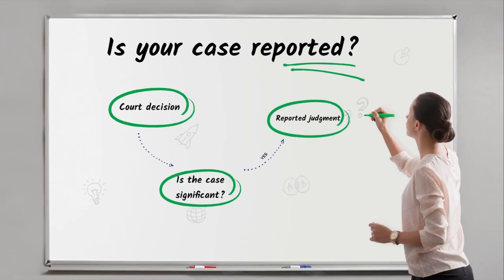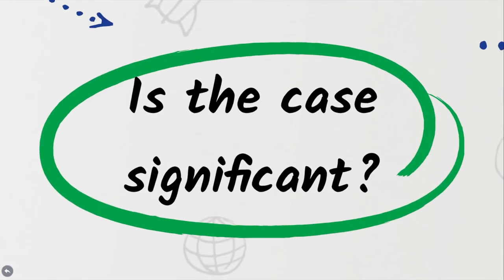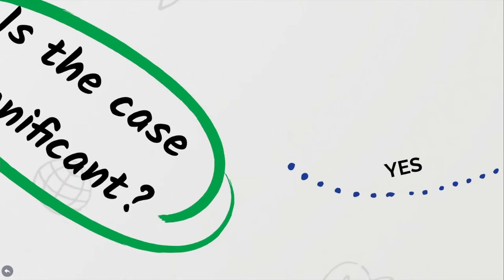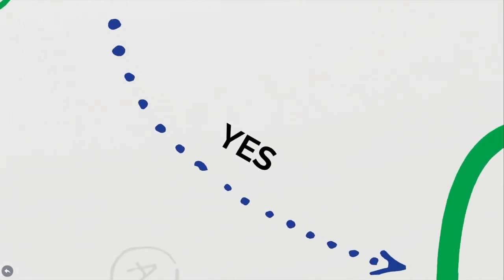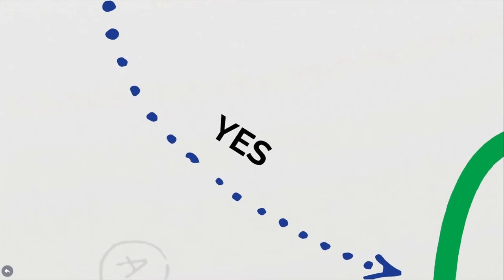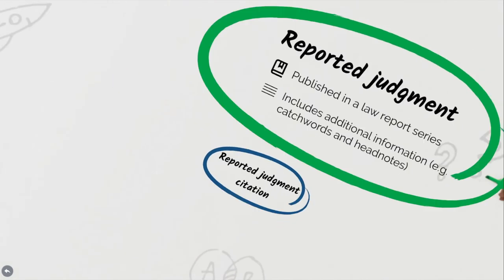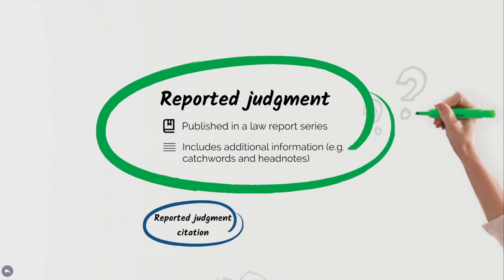Cases that are deemed to be significant, based on the importance of the court the case was heard in or the precedent value of the judgement, will be published in a law report series, which means the case is now a reported judgement. Reported judgements may be published in more than one law report series and will include additional information, such as catchwords and headnotes.